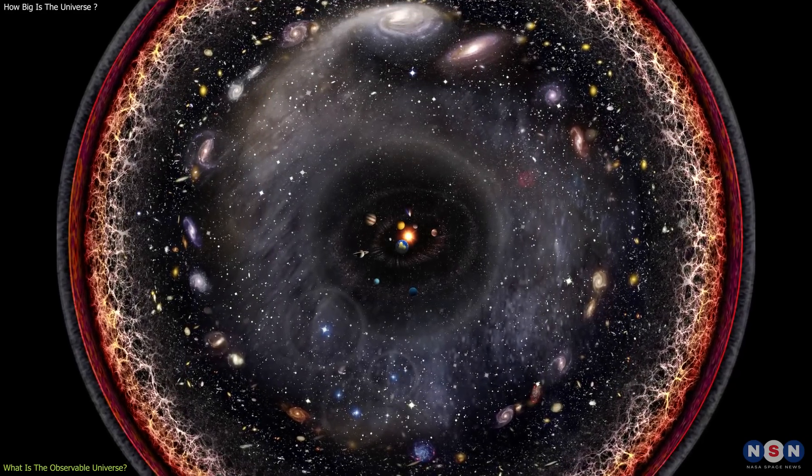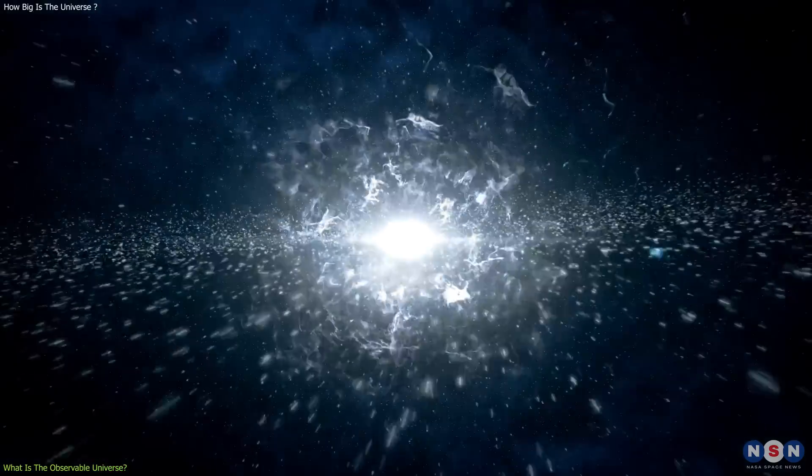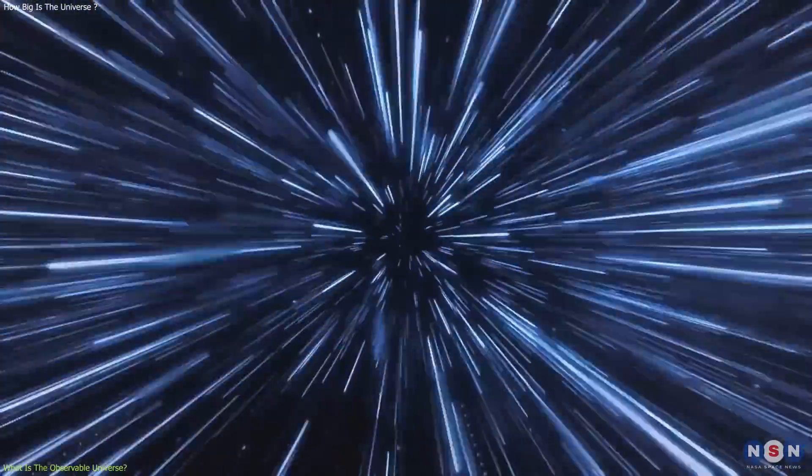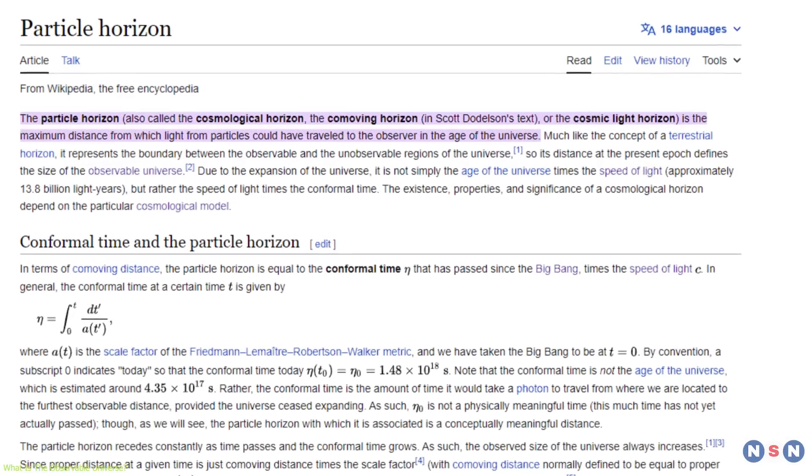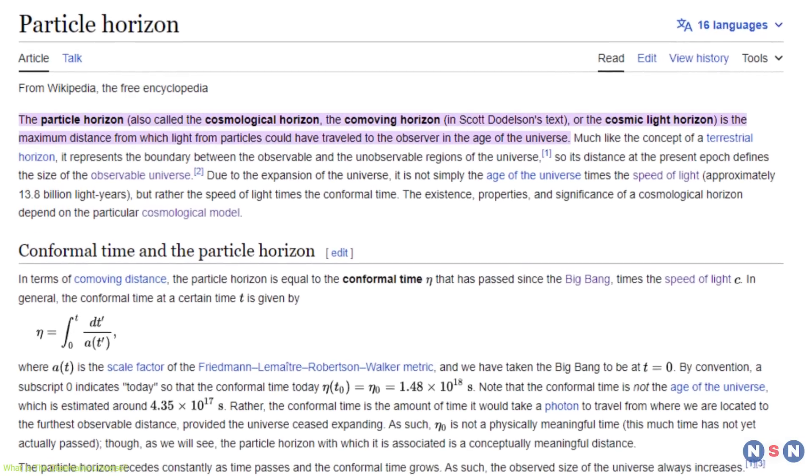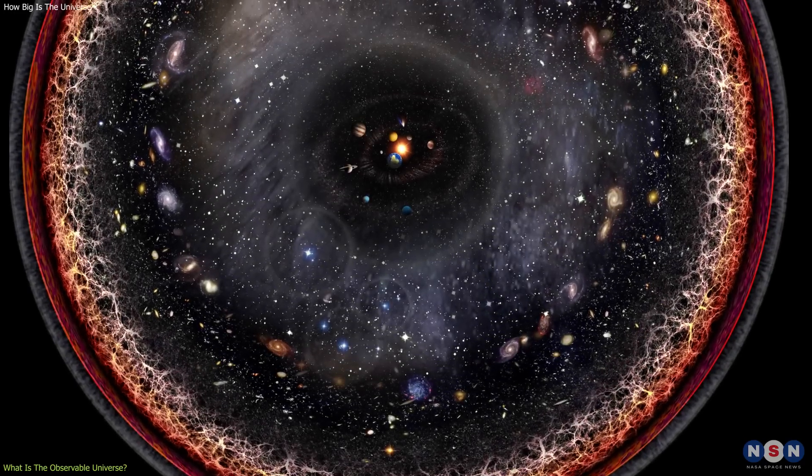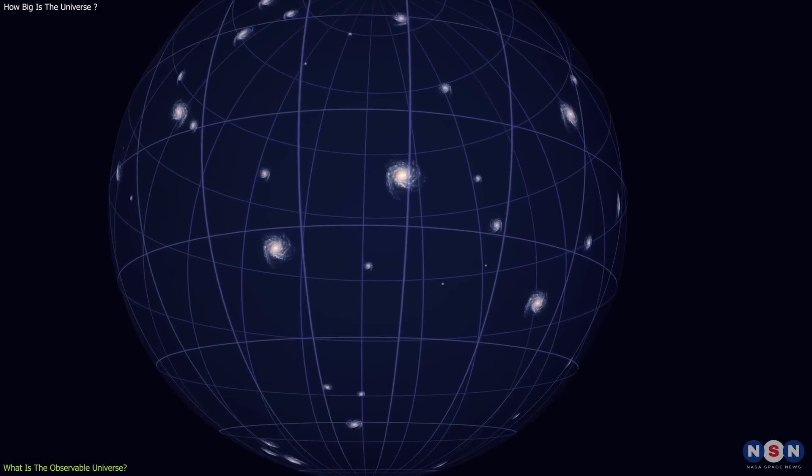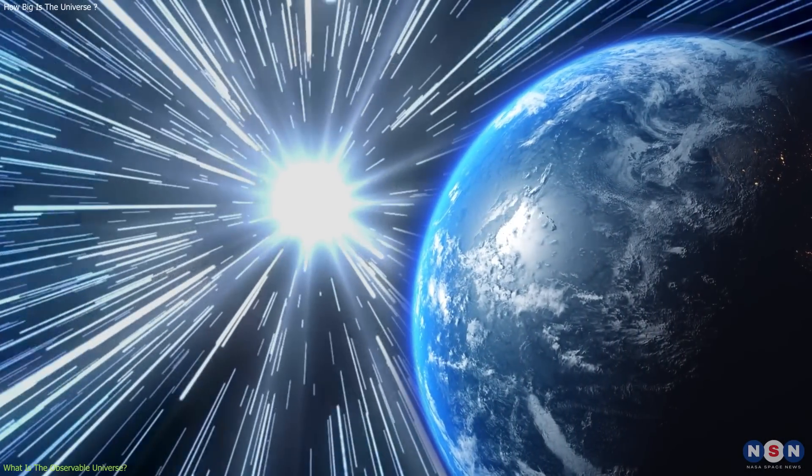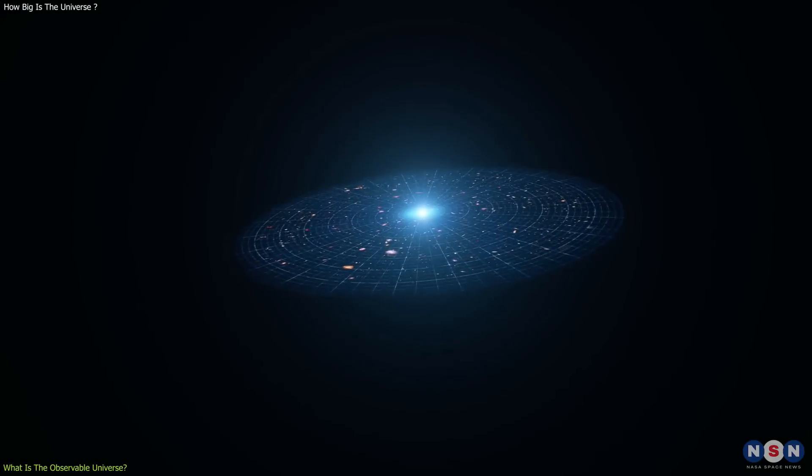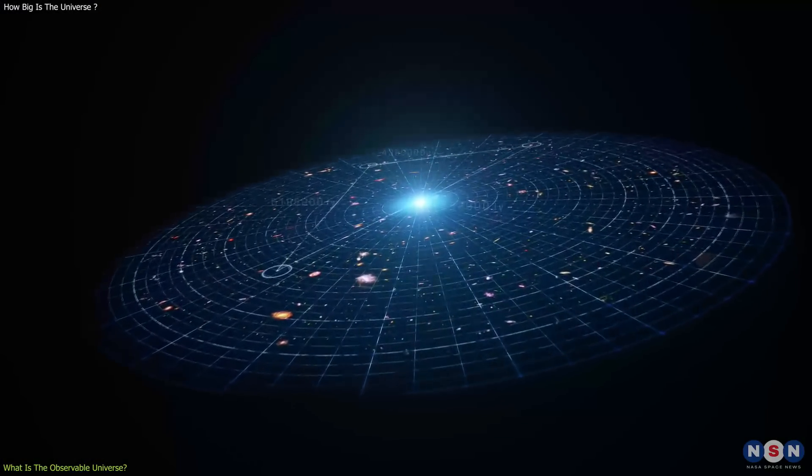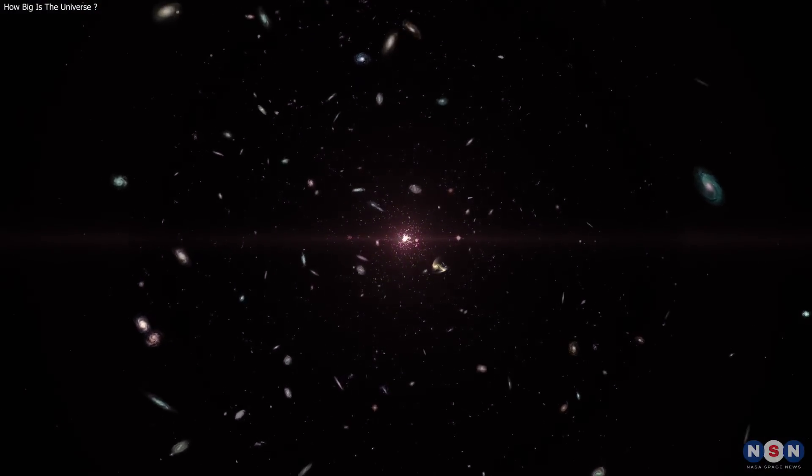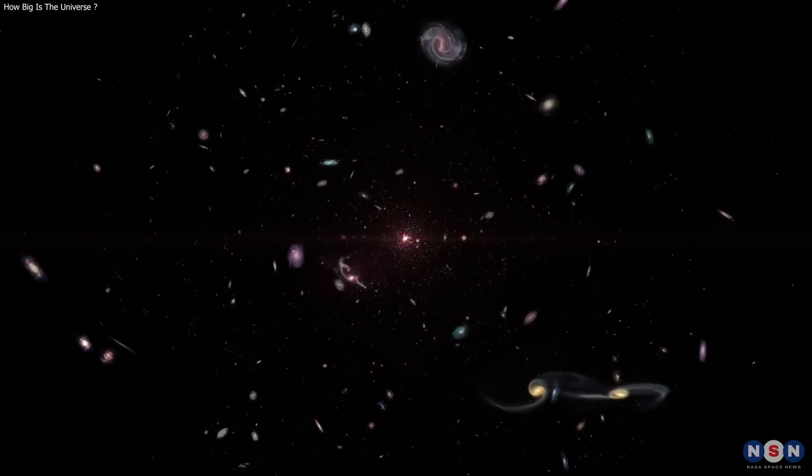So, the observable universe is defined by the distance that light has traveled since the Big Bang, which is about 46 billion light years in any direction. This distance is called the particle horizon, and it is the boundary of the observable universe. But there is a catch. The particle horizon is not fixed, but it changes over time as the universe expands and more light reaches us from distant regions. This means that the observable universe is growing, and we can see more of it as time goes by. But how fast is it growing, and how big is it right now? That's what we will find out in the next section.